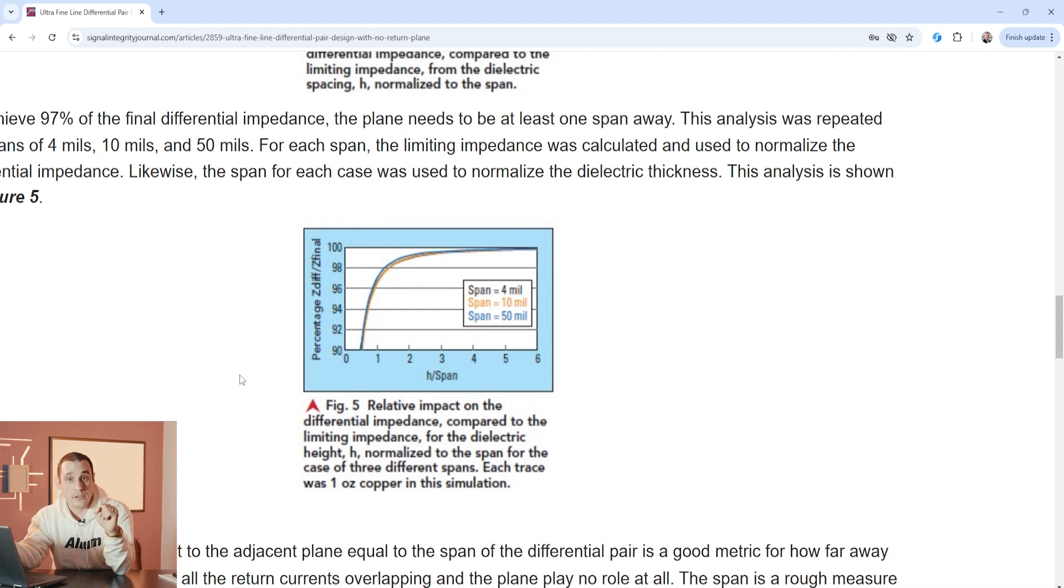Now you can see here that this happens for a variety of values of that span. They start from four mil so that would be like having one mil traces with two mil spacing then to 10 mil and then all the way up to 50 mils. So once you get those pairs close together it is the distance between the differential pairs that really dominates and determines whether or not you're going to have that very narrow line width. So that explains why in order to have very narrow traces in our differential pair with ground very far away from the traces we had to put those traces very close together.